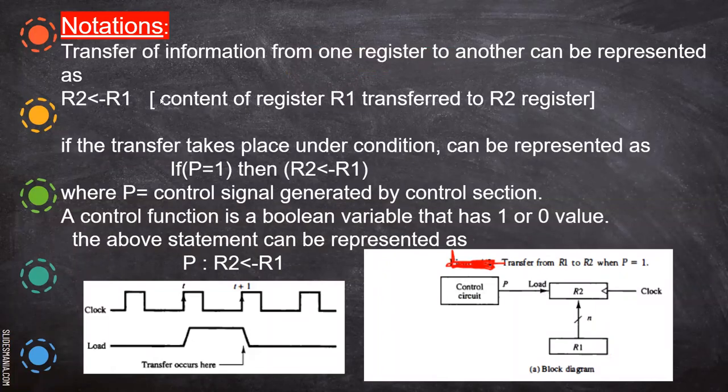We will now see the notations used. Why are we seeing all these? We are going to write instruction sets for any representation — for any coordination that happens in the computer — and we have to represent them in terms of micro operations for human understanding. Any microprocessor manufacturer will give a set of instructions to be operated on the registers and to coordinate within the microprocessor. Using that instruction set, we write programs.